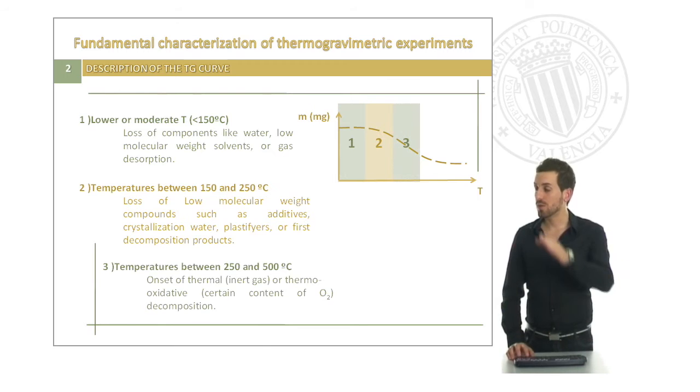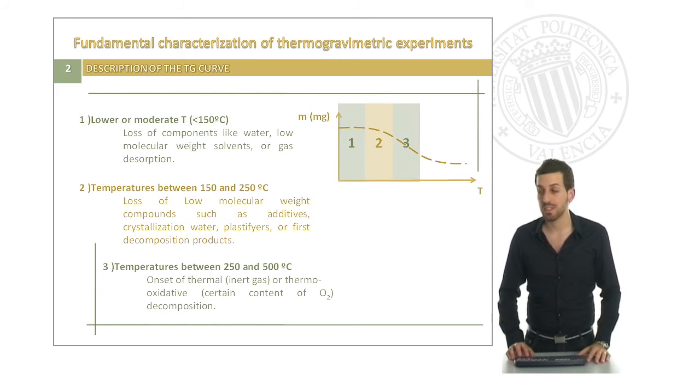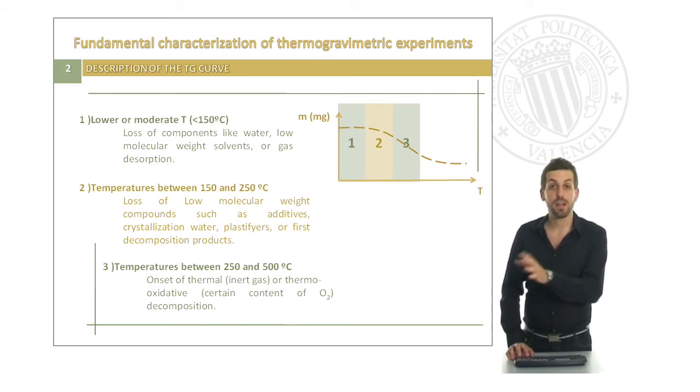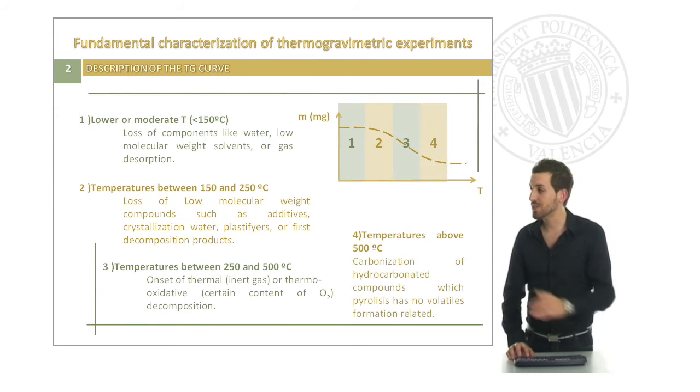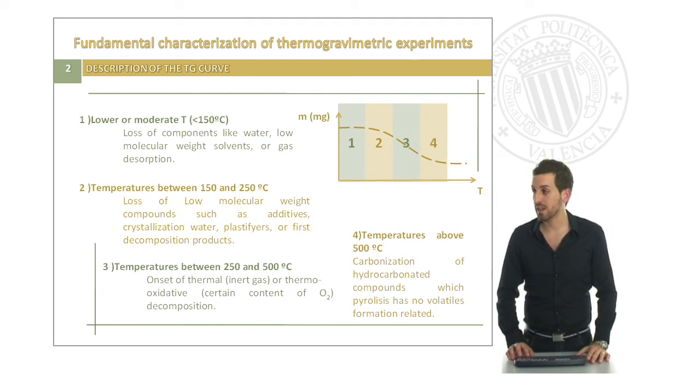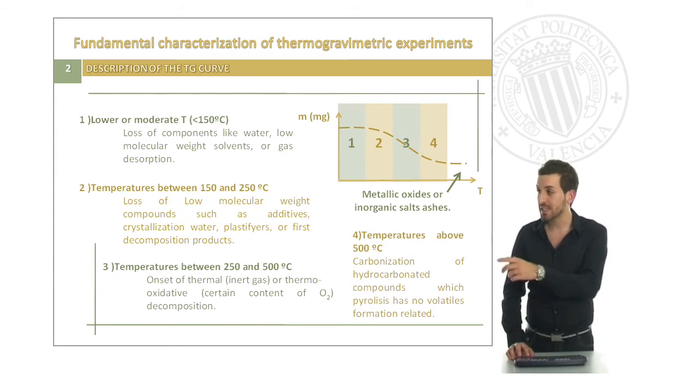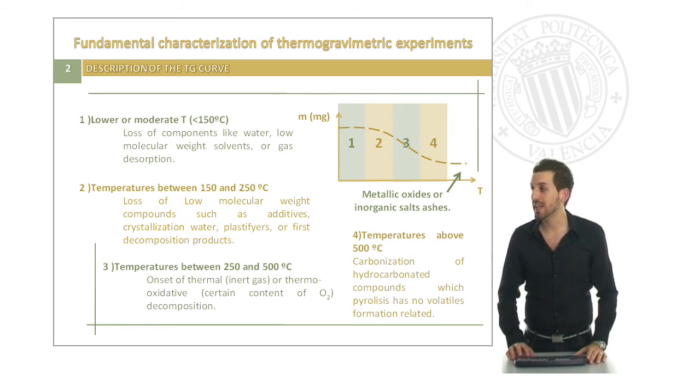When we go to the change of slope in temperatures between 250 and 500 Celsius degrees, we will be able to see the onset of the thermal, if we are analyzing in inert gas, or the thermo-oxidative, if we allow certain content of oxygen composition. If we increase the temperature above 500 degrees, we will find some processes such as carbonization of hydrocarbonated compounds, which pyrolysis has no volatile formation related. At the end, we will see the presence, or not, of some different metallic oxides or inorganic salts ashes.